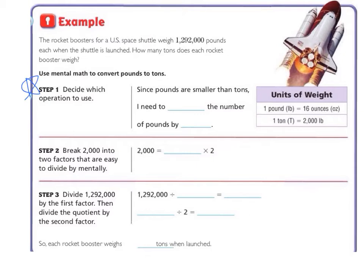Step 1. Decide which operation to use. Since pounds are smaller than tons, we're going from a smaller unit to a larger unit. So I need to divide the number of pounds by, let me look over at our chart, 2,000.